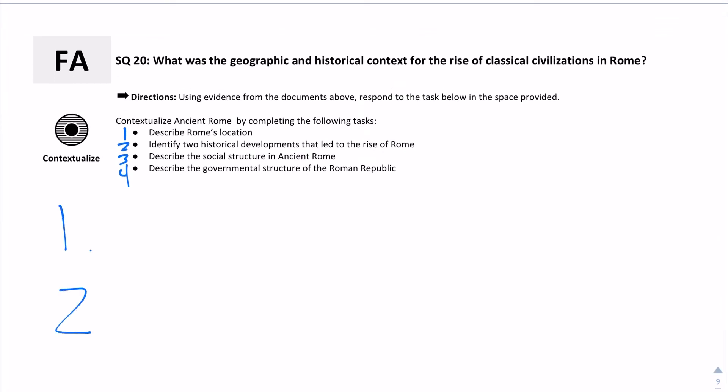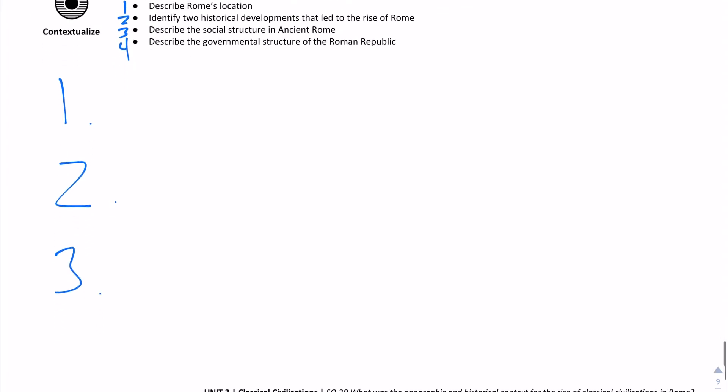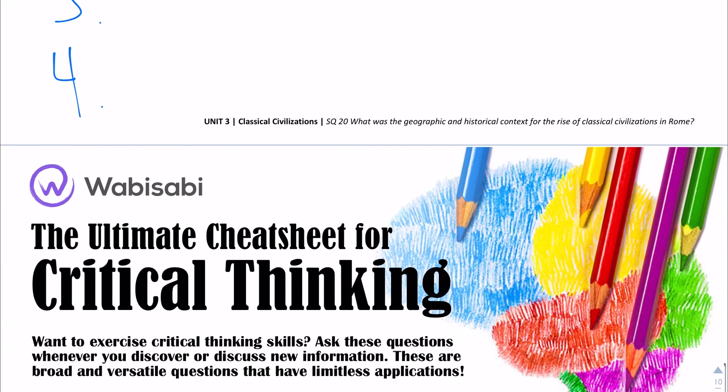I want you to number them down here clearly. Describe Rome's location. Identify two historical developments that led to the rise of Rome. Three, describe the social structure in ancient Rome. And then four, describe the governmental structure of ancient Rome.